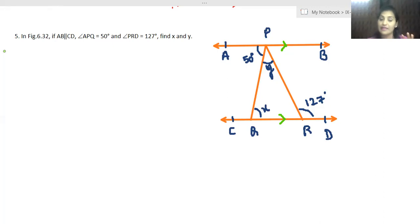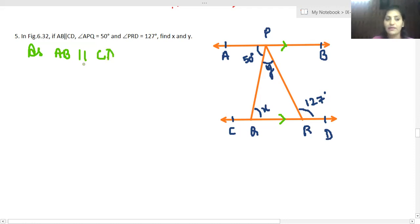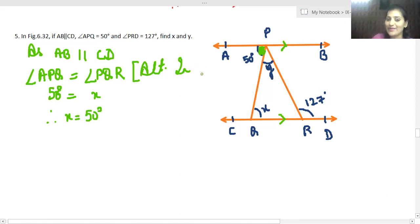What will be the angle? APQ is equal to angle CQR. Okay, APQ, what is APQ? Or angle PQR kya hai? X. So our x is there. Right? The reason is very important to write. It is alternate interior angles.